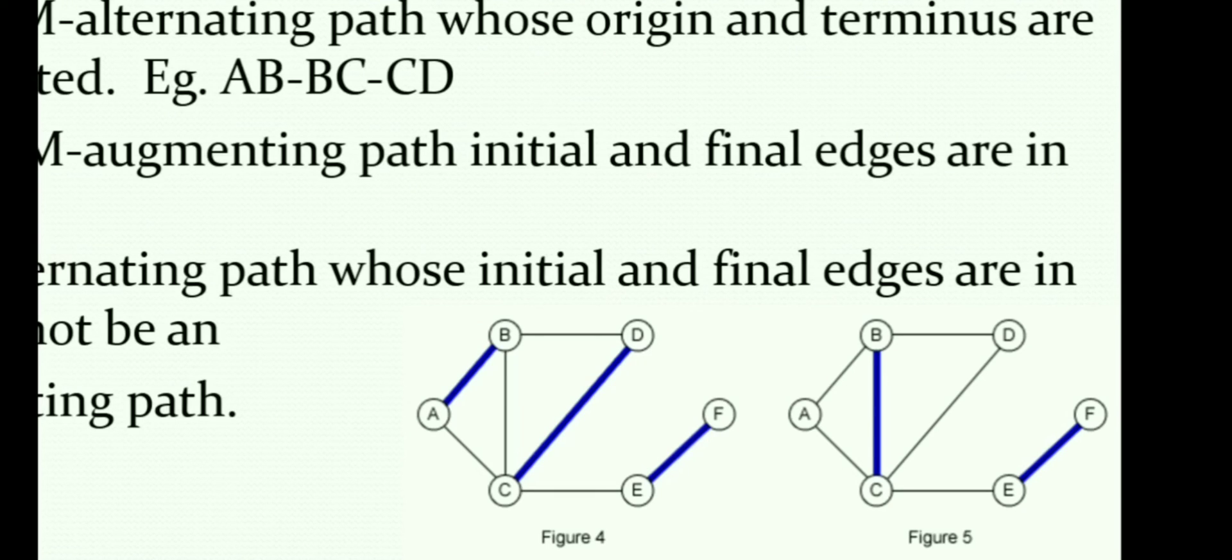So the path AB, BC, CE, EF shows that the edges are in such a way that the path alternates between E minus M and M.